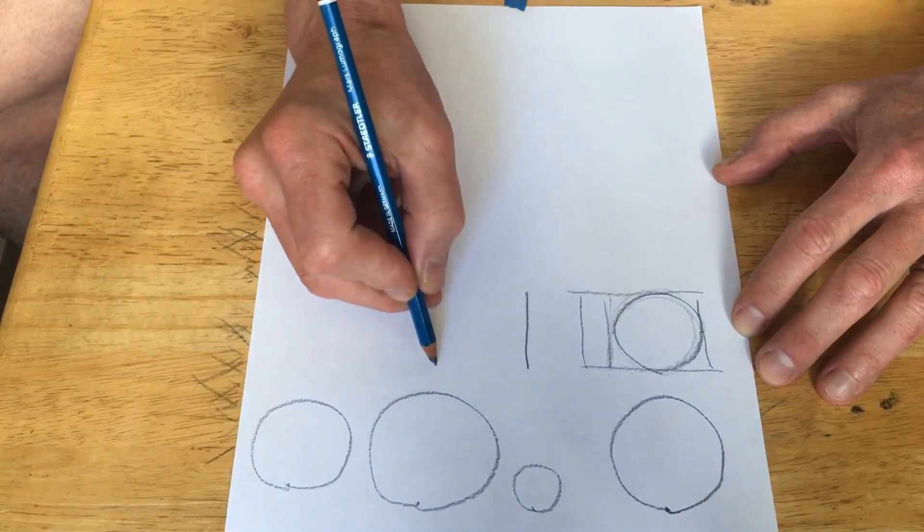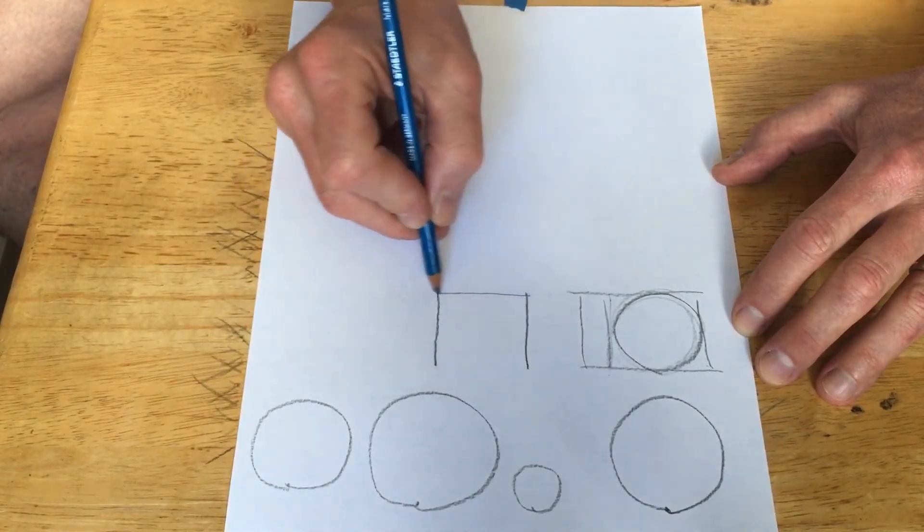So we'll try it again. I'll try to do a better square here. There we go.